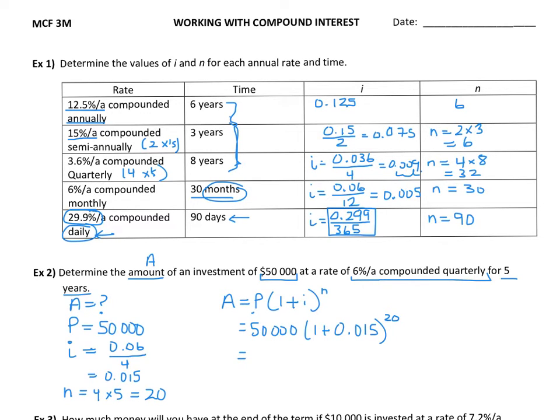So on my calculator, some calculators can handle that all as one calculation. Mine, it's a little bit more complicated, so I'm going to follow BEDMAS. I'm going to add one to my value of i that I calculated, and then I'm going to take that to the exponent.